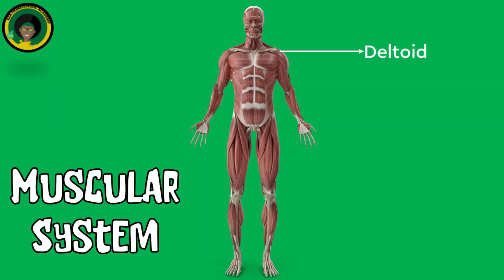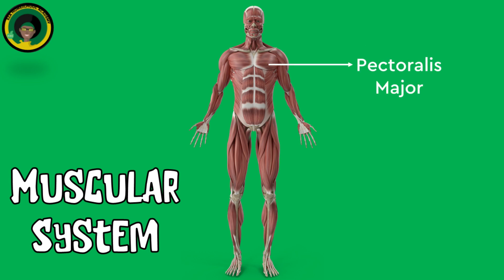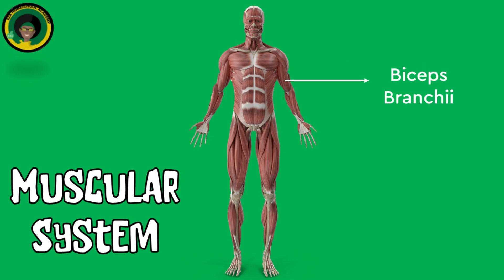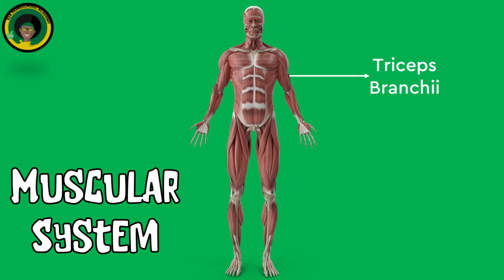The deltoids are located in the shoulder and allow for arm rotation and lifting. Pectoralis Major is located in the chest and helps in arm flexion and adduction. Biceps Brachii, located in the upper arm, allows for elbow flexion.